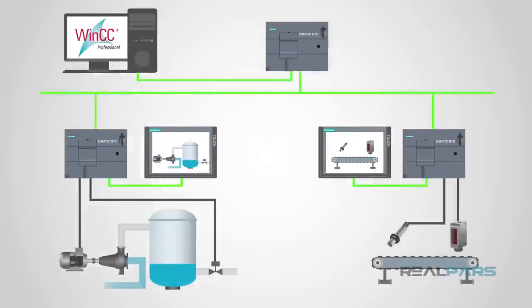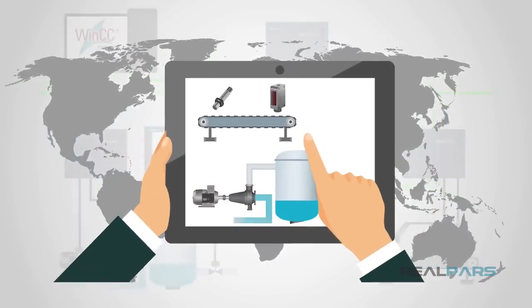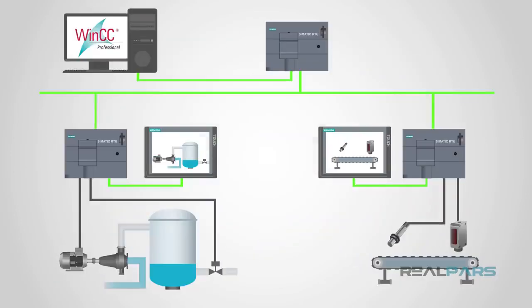A SCADA system is a collection of both software and hardware components that allow supervision and control of plants, both locally and remotely. The SCADA also examines, collects, and processes data in real time.